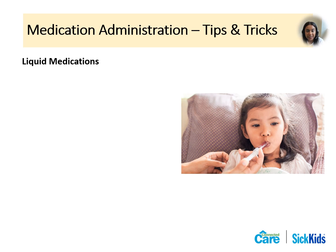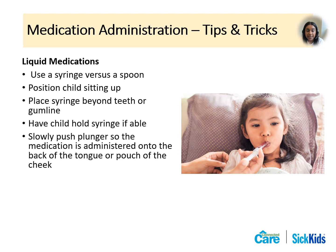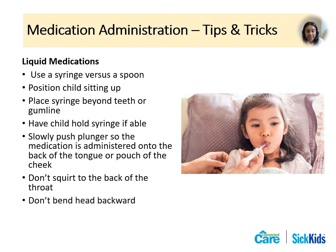Administering medications to children can be challenging. For liquid medications: use a syringe instead of a spoon to ensure accurate dosing and guide the medication into the mouth. Position the child sitting up to prevent choking. Place the syringe beyond the teeth or gum line. Have the child hold the syringe if possible — this promotes independence and may be less stressful. Slowly push the plunger so the medication reaches the back of the tongue or cheek. Do not squirt to the back of the throat, and do not tilt the head backwards as swallowing is difficult in that position. Continue to use positive rewards for success.